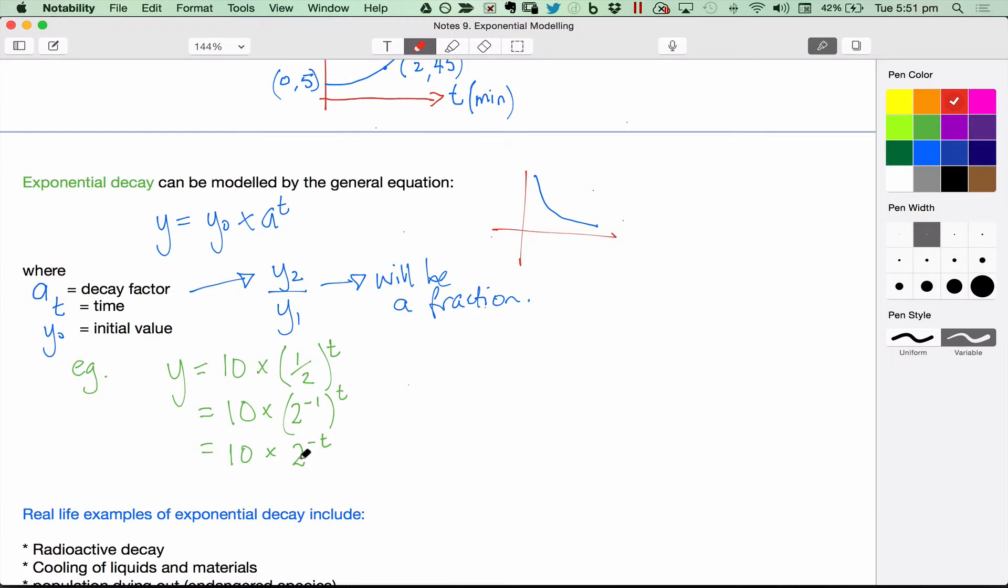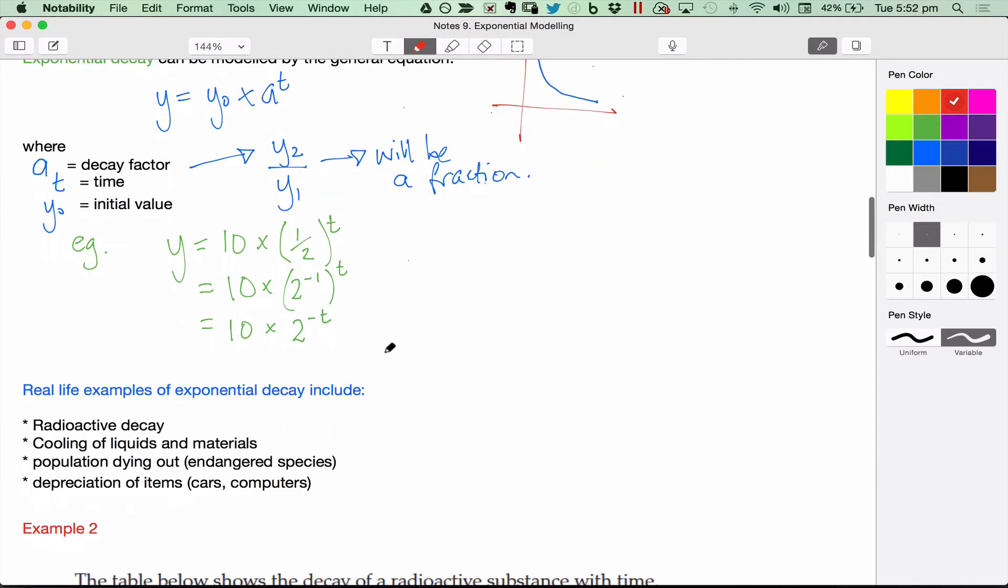Real life examples of exponential decay include radioactive decay, cooling of liquids and other materials, population dying out, for example, endangered species, and depreciation of items. So things that you buy new, and they immediately lose their value, and they keep losing values as time goes on.